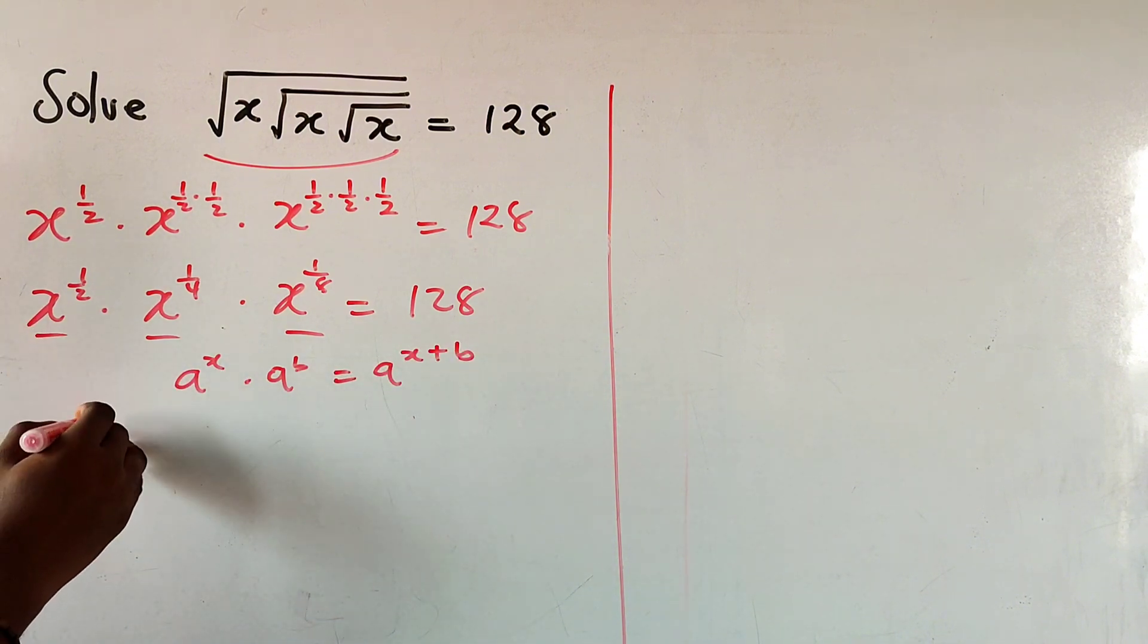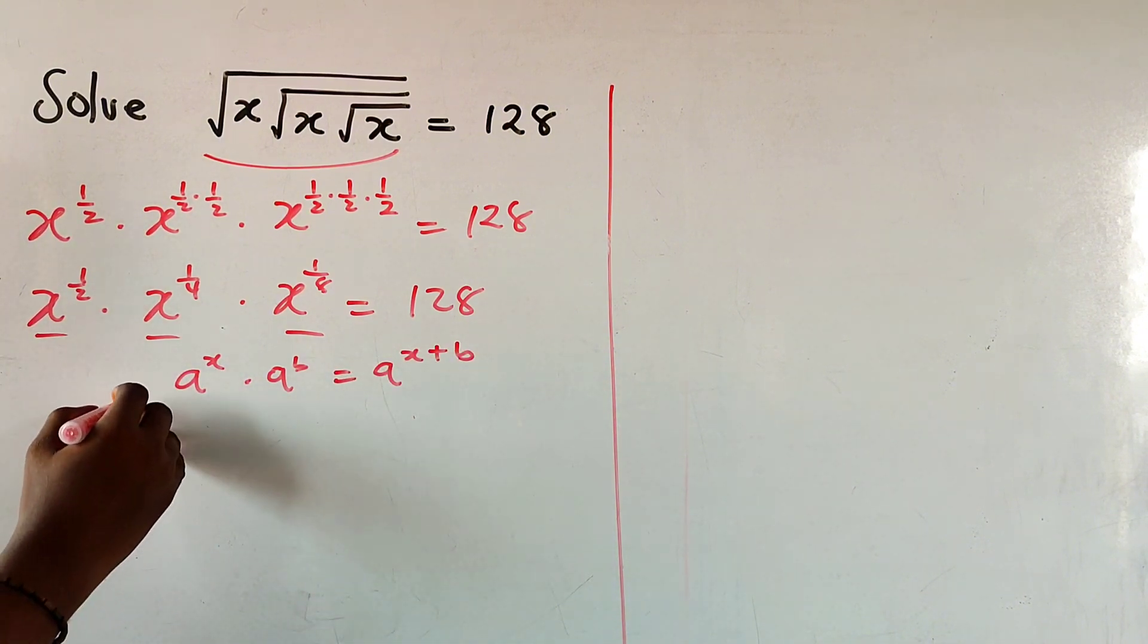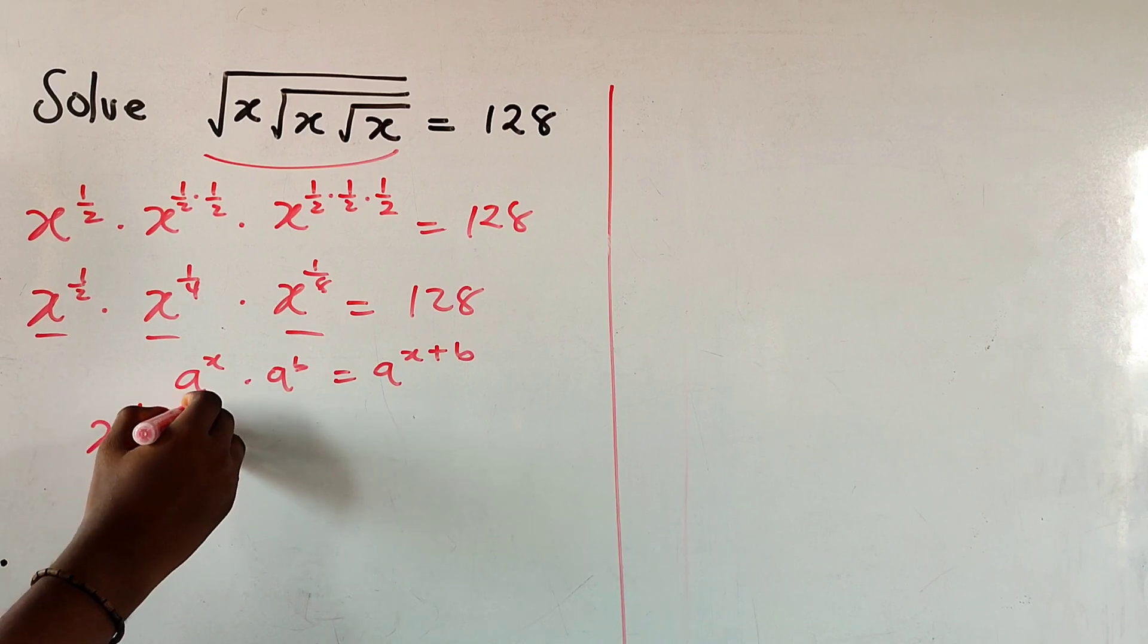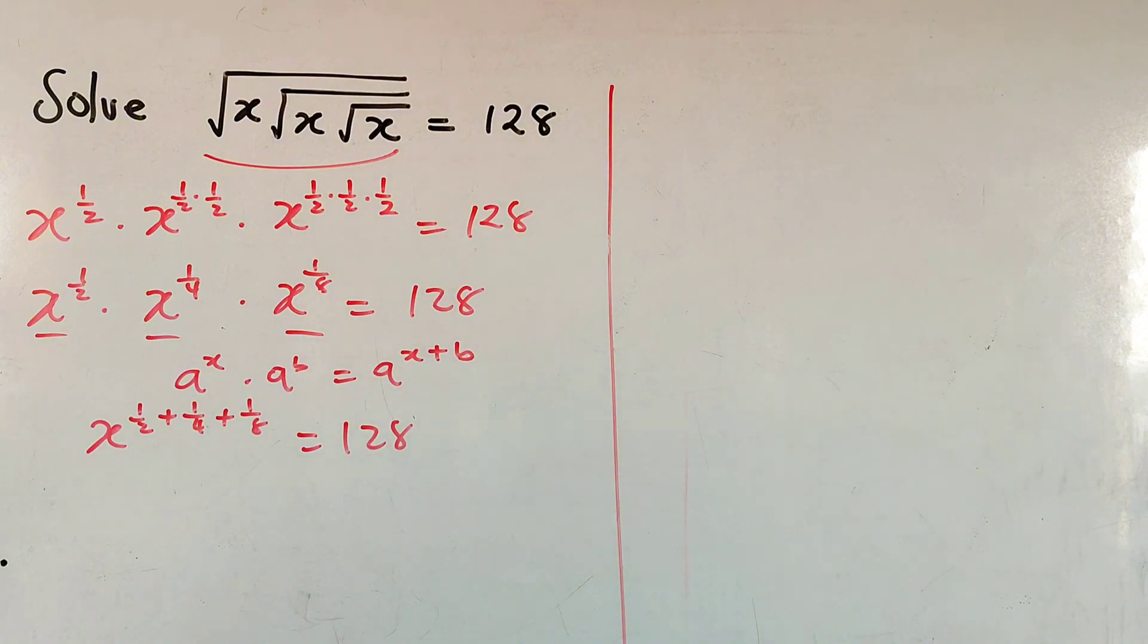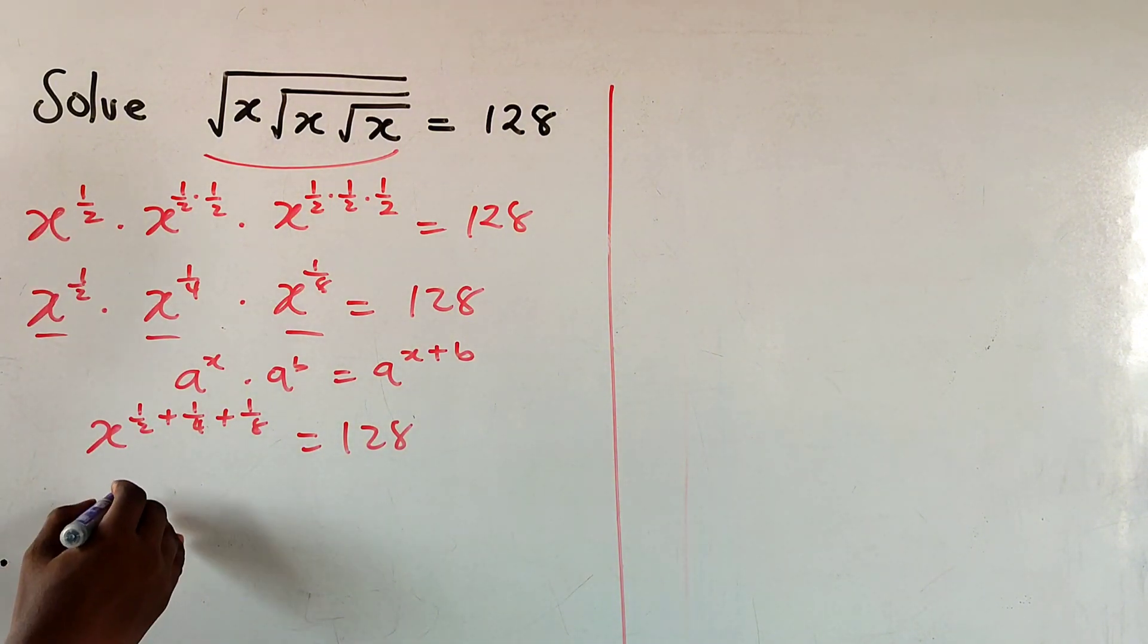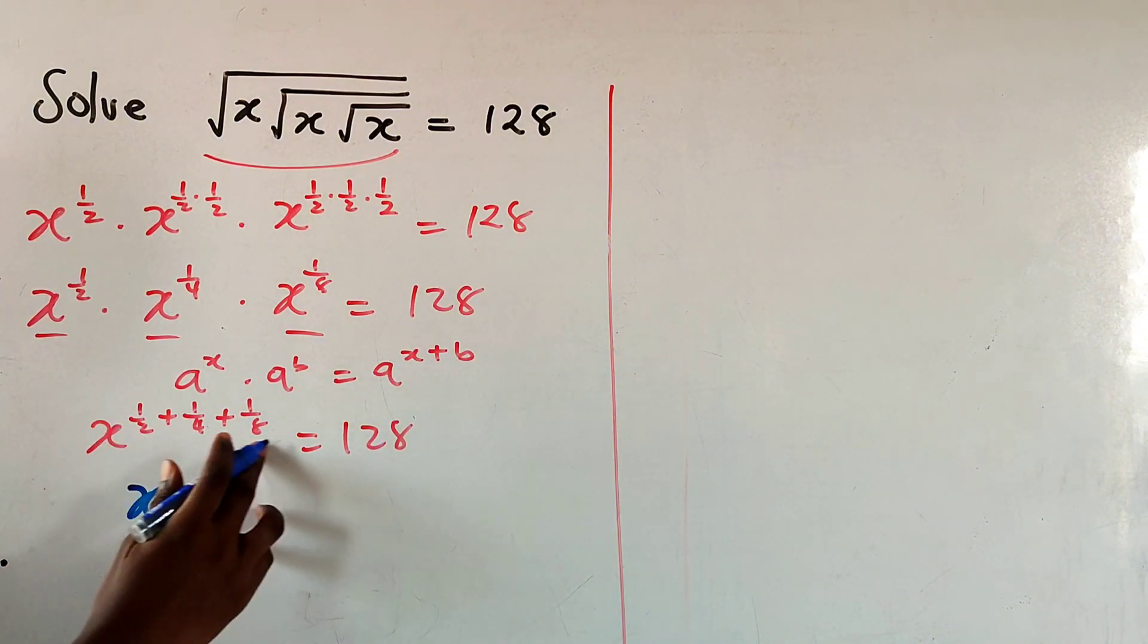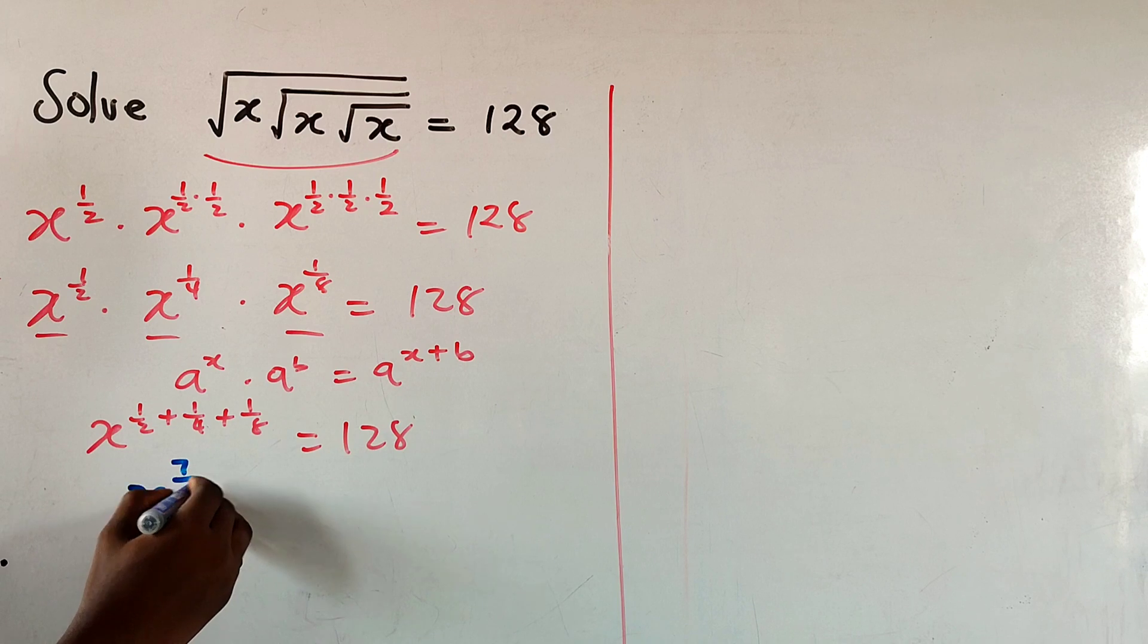So we have here x to the power of 1 over 2 plus 1 over 4 plus 1 over 8 equal to 128. Now this will give you, find the LCM and all that, you're going to get 7 over 8 here.